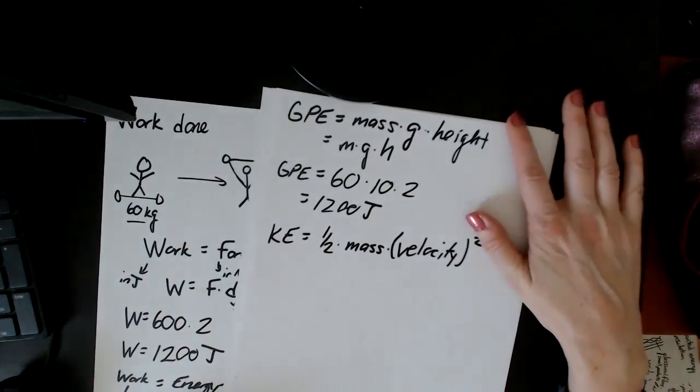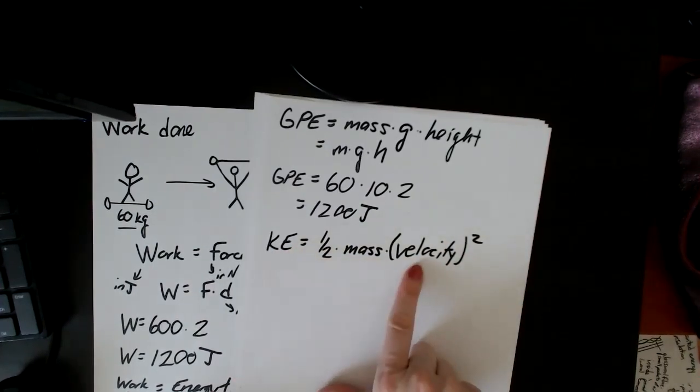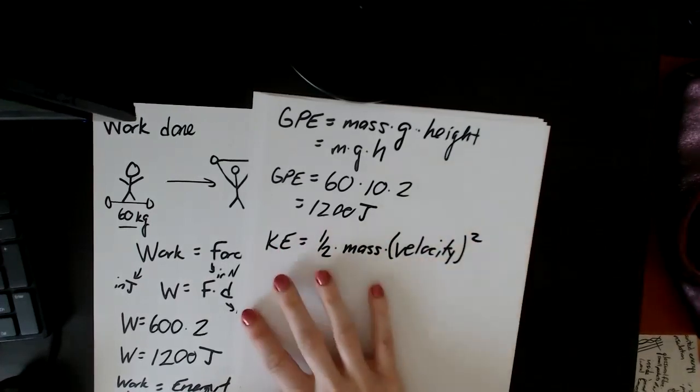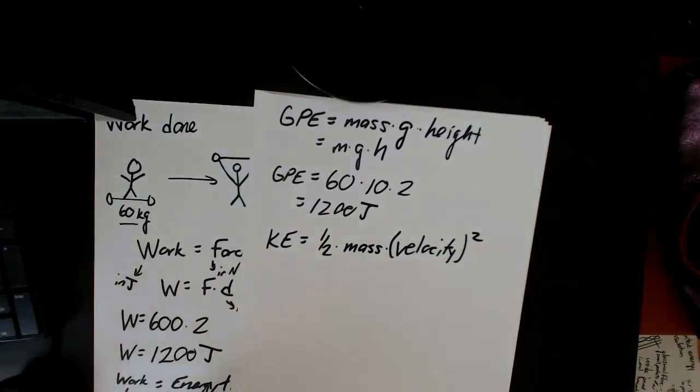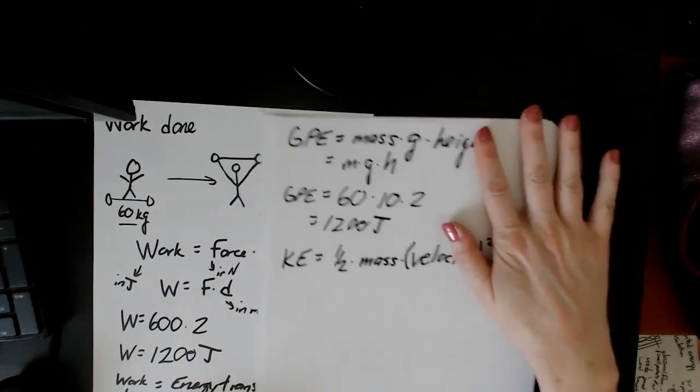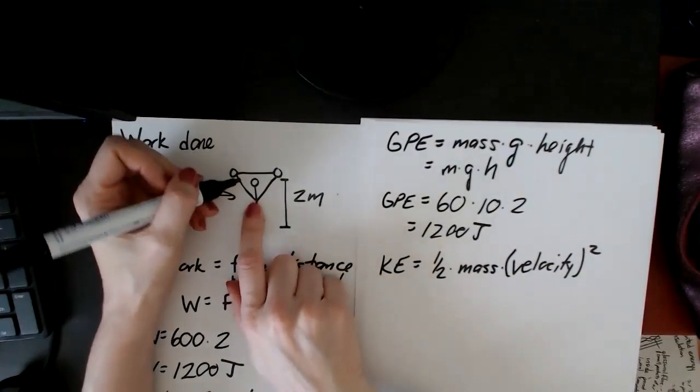So this stands for kinetic energy, mass again in kilograms, velocity in meters per second. And don't forget to square it. And the idea for this is that kinetic energy is all about movement. So if you don't have any velocity, then the object doesn't have any kinetic energy, and this whole thing will equal zero. So again, continuing with this example.